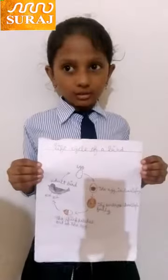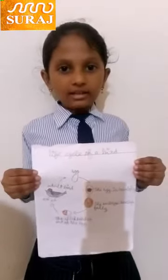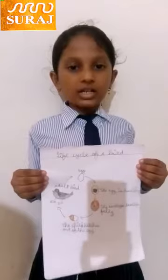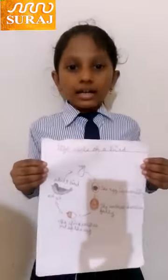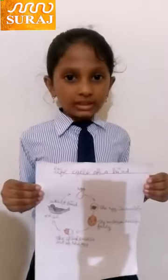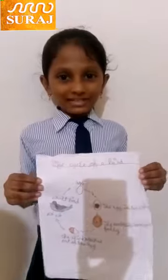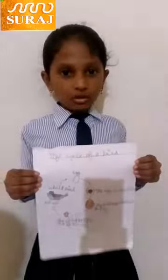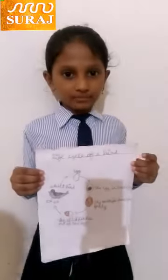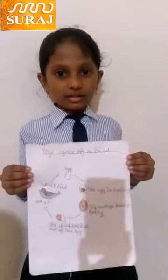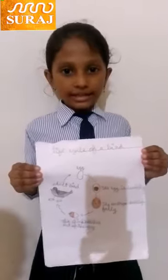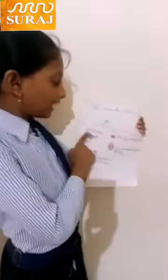We already know that a bird lays an egg in a nest and sits on them to keep them warm. After some time the eggs hatch and the baby bird comes out. But within the egg, the embryo goes through different stages of development before it is ready to hatch out. This is the adult bird.